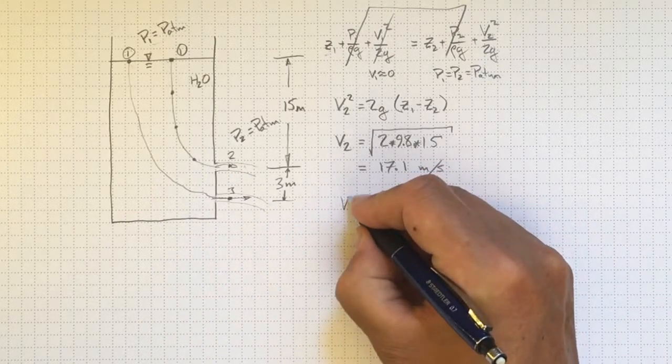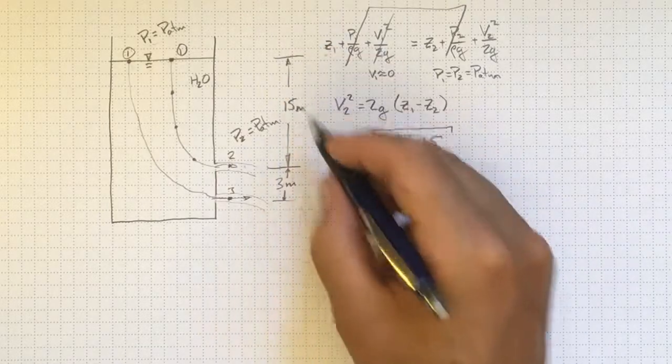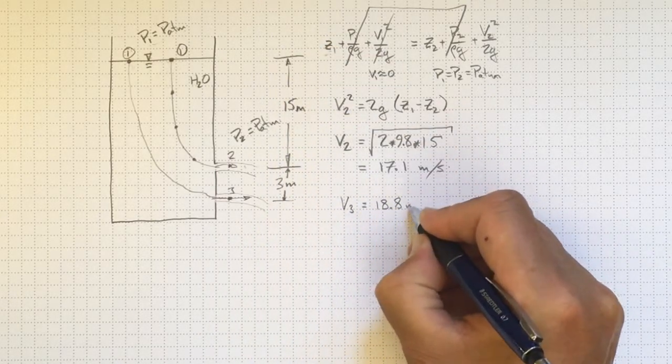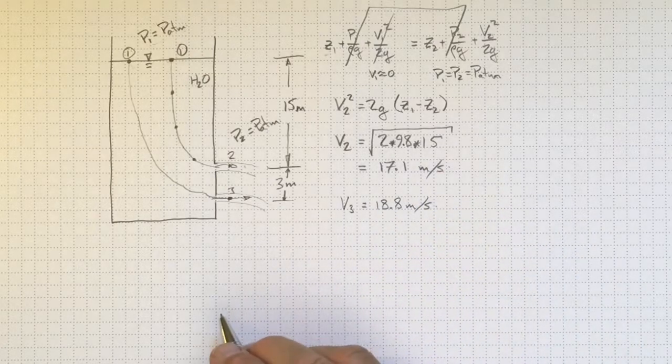And V3, if we punch it in with 18 meters instead of 15 meters, turns out to be 18.8 meters per second.